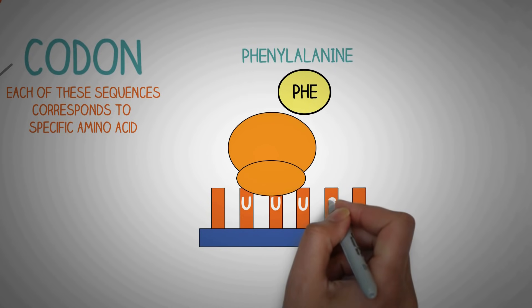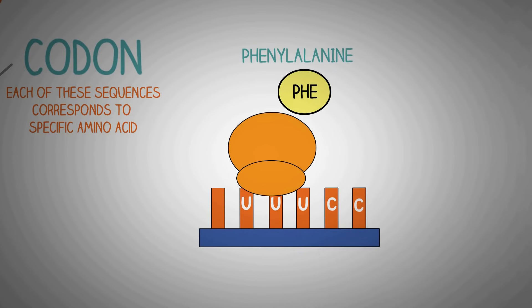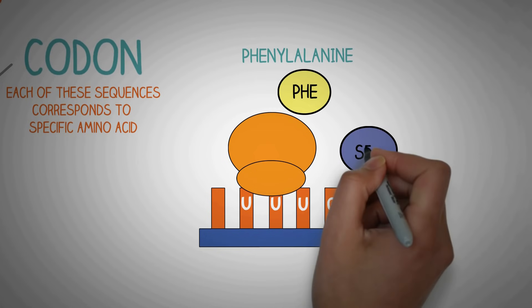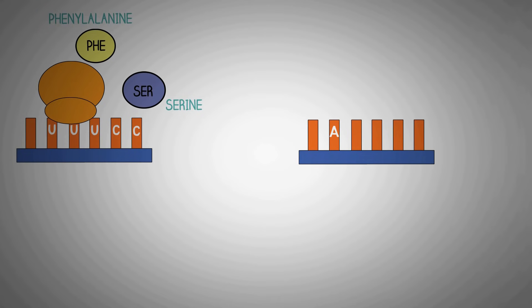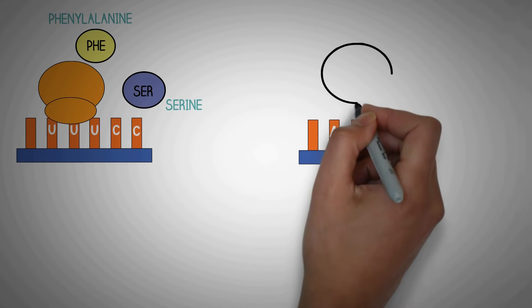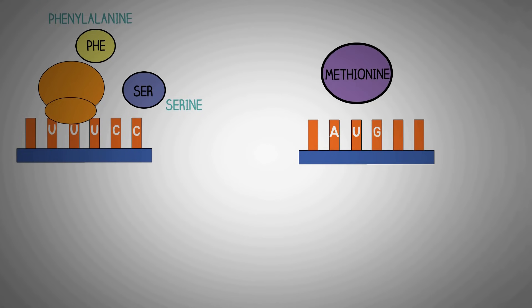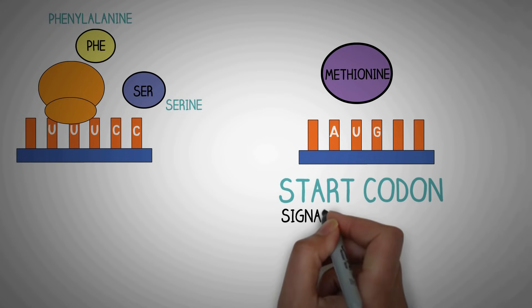Similarly, if the code is UCC, the amino acid that will be used is serine and so on. The codon AUG codes for the methionine and is also the start codon which signals the ribosome to start synthesizing the protein.